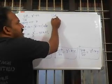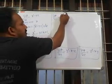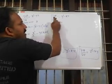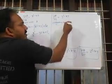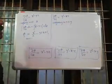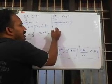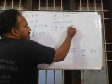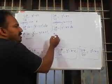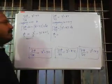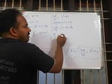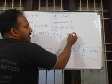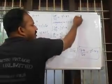Next, integrating dou φ/dou y = y² - xz with respect to y gives φ₂ = y³/3 - xyz + c₂.